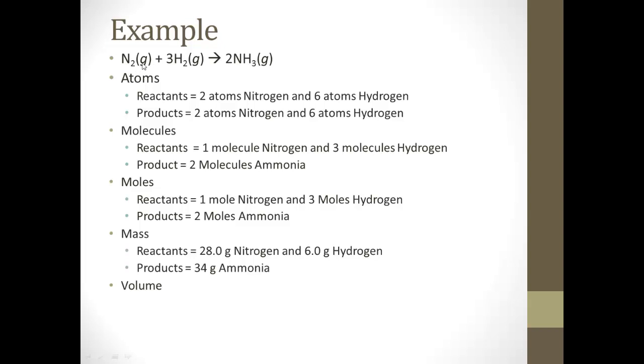Finally, volume is 22.4 liters per mole, since they're all gases, so there's going to be 22.4 liters of nitrogen. Three times 22.4 for 67.2 liters of hydrogen. And then, on the right, it's 2 times 22.4 because it's two moles, and we end up with 44.8 liters of ammonia. Now, with the mass, we always have to remember the law of conservation of mass, which is why the mass on the left of the reactants has to always be equal to the mass on the right of the products.